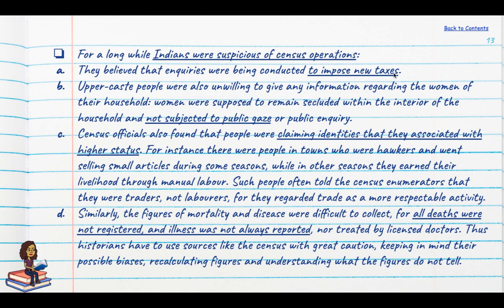Indians thought the British were trying to impose new taxes, so they fudged data. For upper-caste families maintaining purdah, they were not happy giving data about women in their homes to officials. Census officials also found that people were claiming identities of higher status — for example, hawkers who did manual labour in other seasons would enumerate themselves as traders rather than labourers.